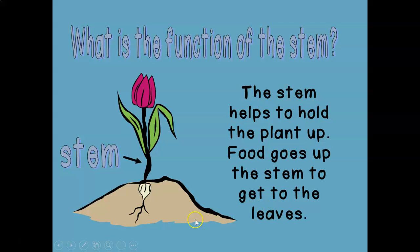The second part that we're going to talk about is called the stem. What is the function or special job of the stem? The stem helps to hold the plant up above ground. Food goes up the stem to get to the leaves and flower. So it's like a delivery system that delivers water and nutrients to the leaves and flower.